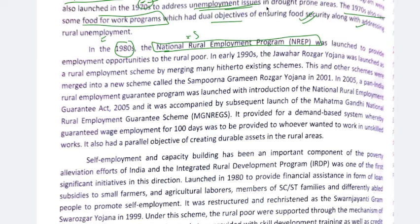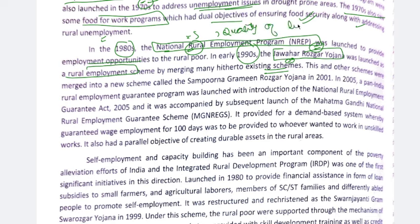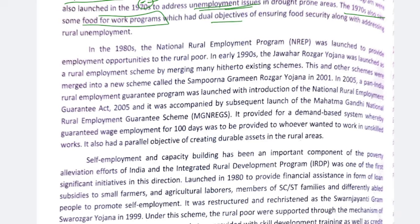In the 1980s, important schemes appeared: the National Rural Employment Program (NREP) was launched to provide employment opportunities, improve the quality of life in rural areas, and grow the rural economy faster. After NREP, Jawahar Rozgaar Yojana (JRY) came and merged the older schemes. These were then further merged into the Sampoorna Grameen Rozgaar Yojana in 2001.